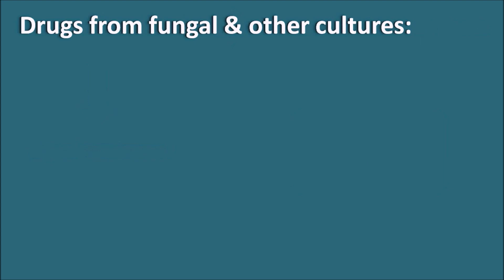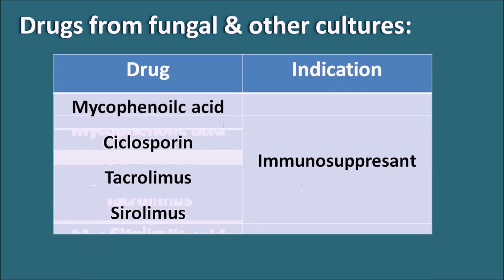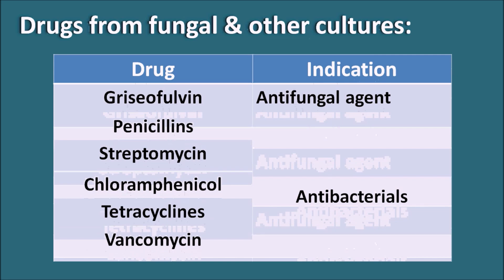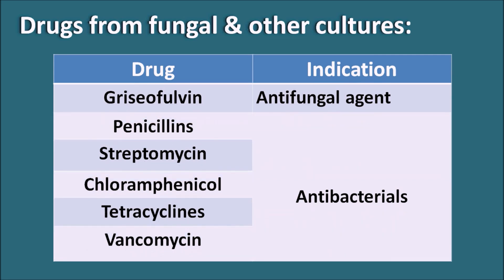Drugs coming from fungal and other cultures include mycophenolic acid, cyclosporine, tacrolimus, and sirolimus — all acting as immunosuppressants. Griseofulvin acts as an antifungal agent. Many other drugs such as penicillin, streptomycin, chloramphenicol, tetracyclines, and vancomycin act as antibacterials. All these are obtained from various bacterial and fungal cultures, and the list of antibiotics from natural sources is extensive.